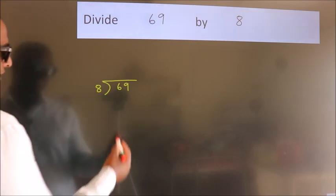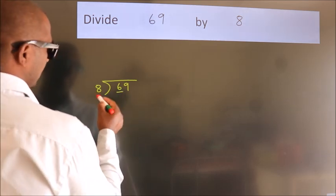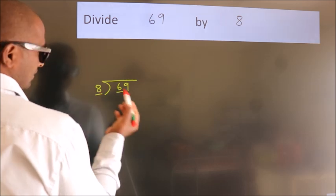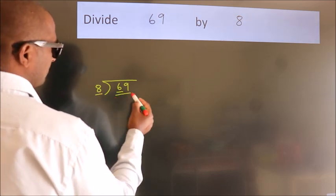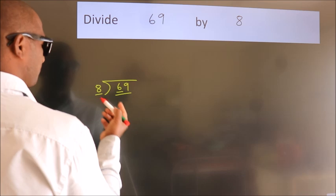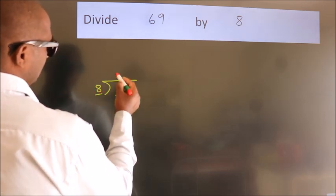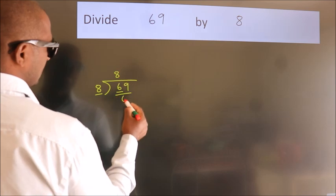Next. Here we have 6. Here 8. 6 is smaller than 8, so we should take two numbers. 69. A number close to 69 in the 8 table is 8 times 8, 64.